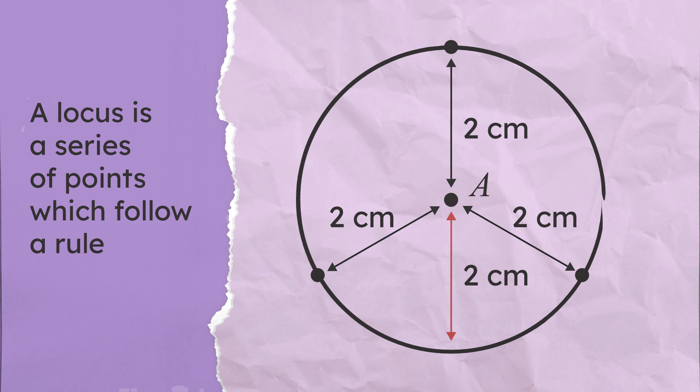The circle is the locus of points that are 2 cm away from A. Wherever you are on the circle, you would always be 2 cm from A.